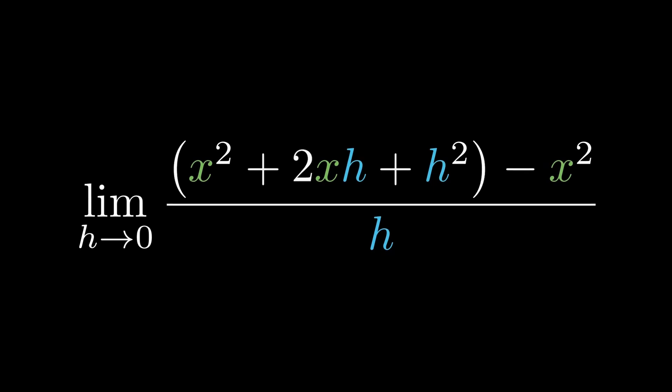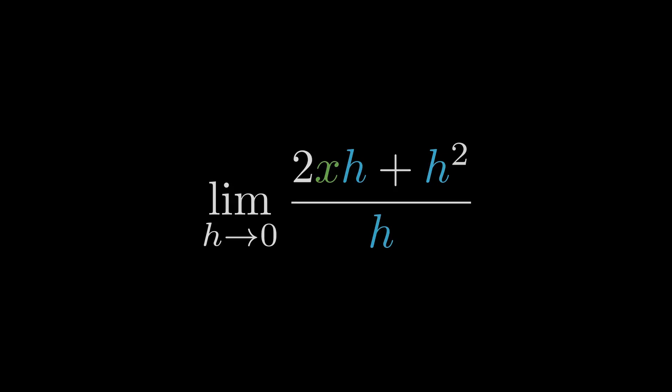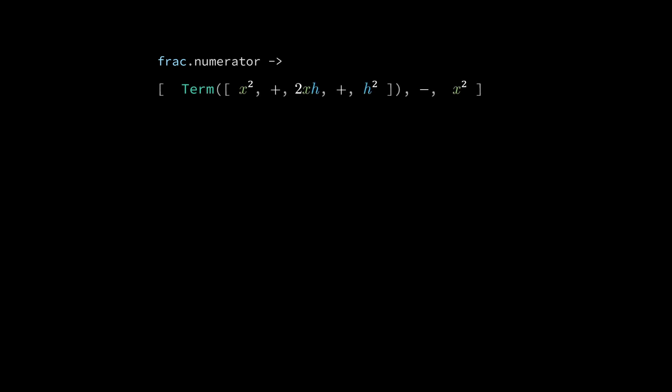Let's remove the parentheses wrapping the binomial expansion, and then we will subtract away the x squared terms. At this point in the program, the fraction's numerator is a math text that is represented by the following array. The first element is the term component that contains the binomial expansion. Then there are the minus and x squared elements. I'm going to recreate the numerator, where we will place the elements of the binomial expansion directly into its array.